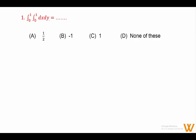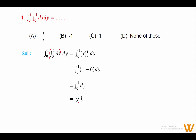First MCQ: integration from 0 to 1, integration from 0 to 1 dx dy. Solution: evaluate the inner integral with respect to x — integration of dx is x, evaluated from 0 to 1. Substituting limits gives 1 minus 0 = 1. Then integrate dy from 0 to 1, giving y from 0 to 1 = 1 minus 0 = 1. Answer is option C: 1.